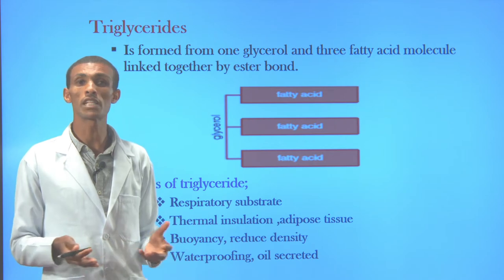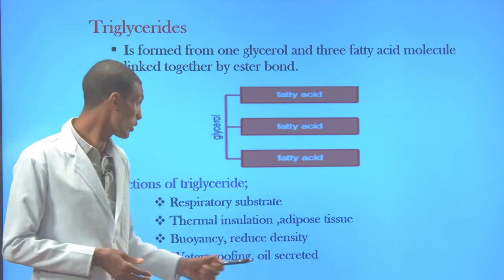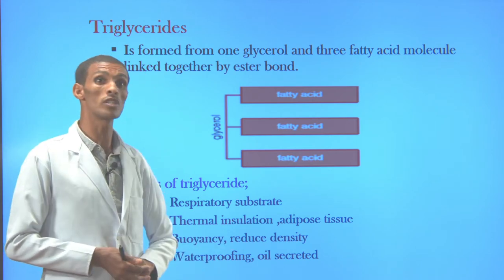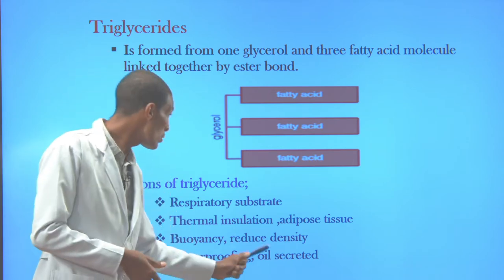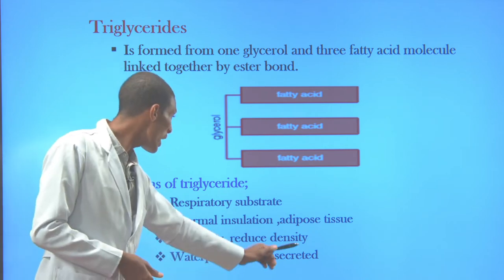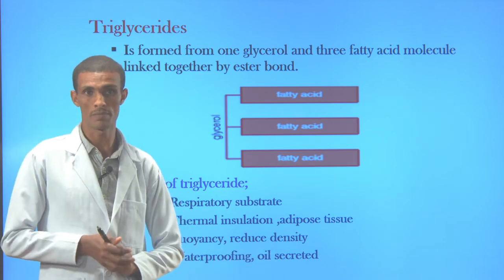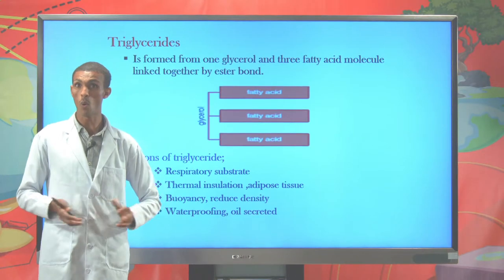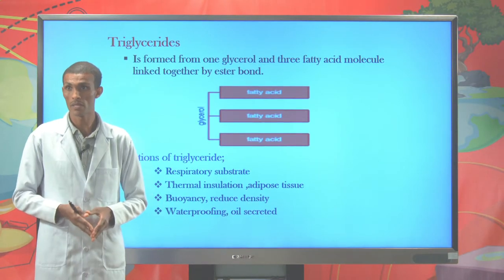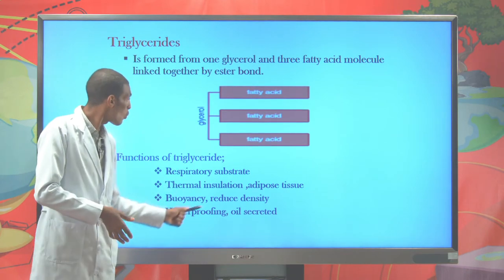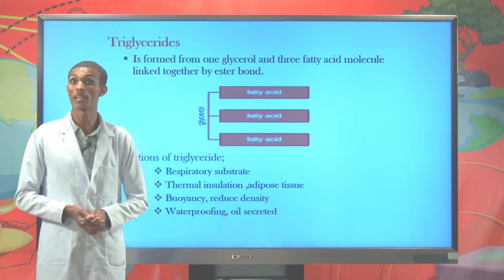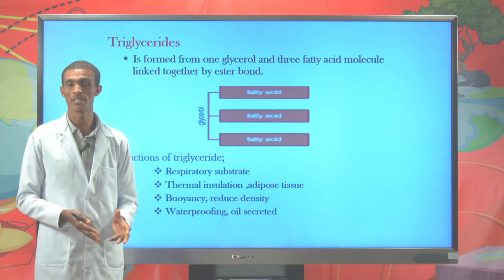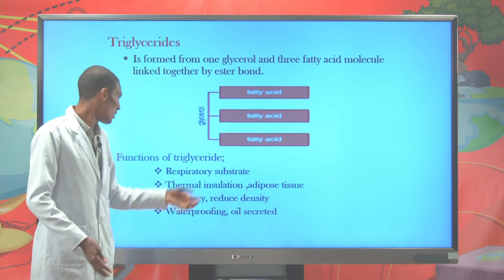Adipose tissue found below the animal's skin is very important for temperature insulation. Triglycerides are also important for buoyancy — they reduce the density of animals, allowing them to float on the surface of water. Additionally, oil secreted on the surface of animal feathers or skin serves waterproofing purposes. So triglycerides serve the functions of energy storage, temperature regulation, buoyancy, and waterproofing.